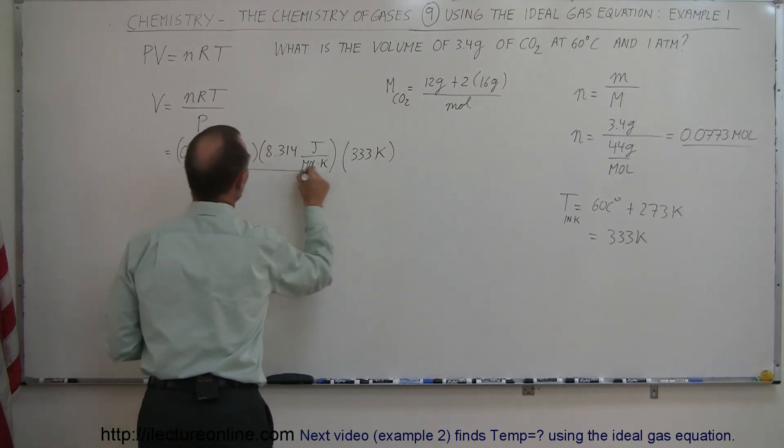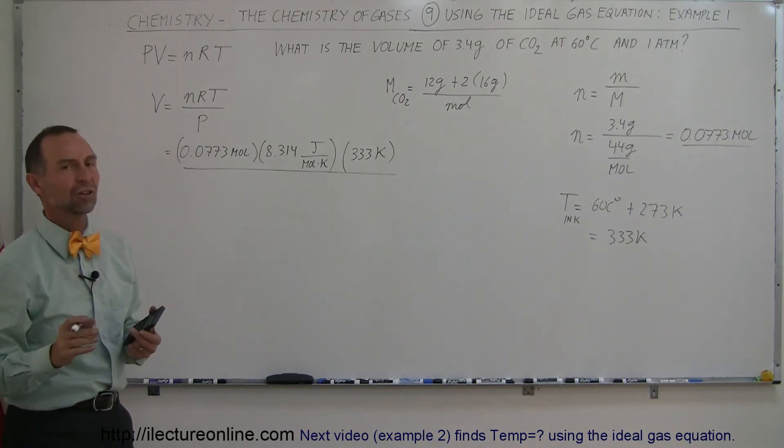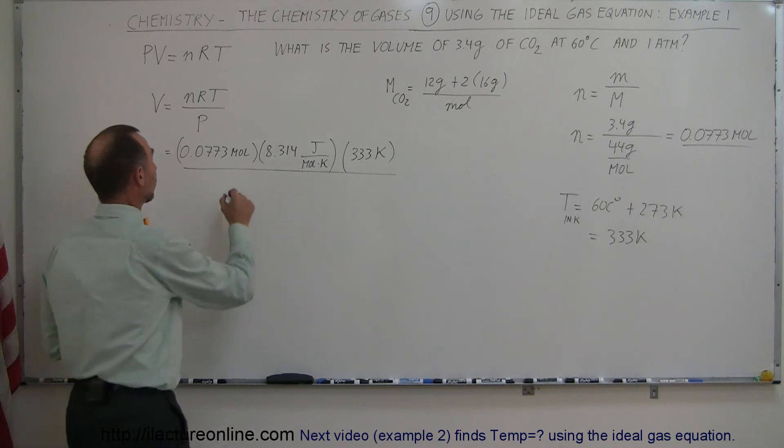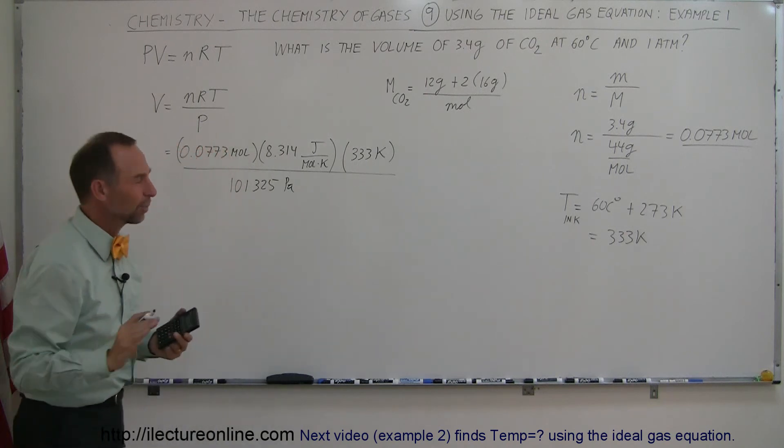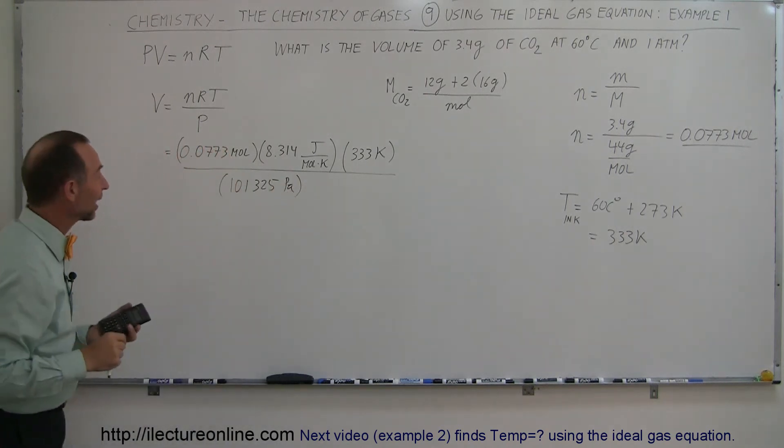And we divide the whole thing by the pressure. Now, we were given the pressure in atmospheres, so we have to convert that to standard units, which is Pascals, and so it's 101,325 Pascals. I know I don't need this many significant figures, but that's okay. That's the number I keep memorizing, so that's the number that ends up on the board.